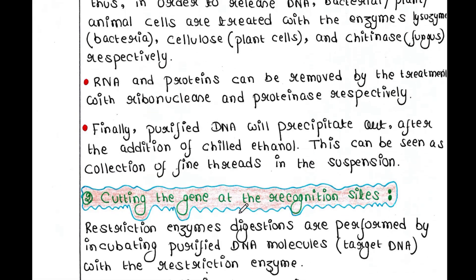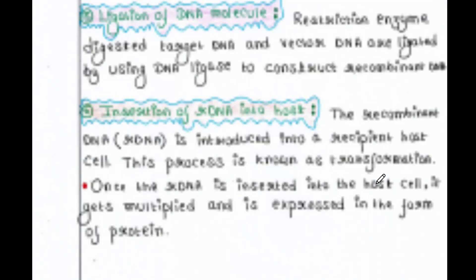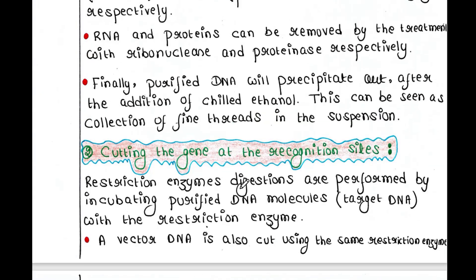The next step is cutting the gene at the recognition sites. Now you have the whole DNA, but you need the gene of interest specifically. You need to add some restriction enzymes to cut this gene of interest. Your restriction enzyme will cut your gene on this side and on this side, and then you will get your gene of interest. You also need to cut the vector DNA with the same restriction enzyme at two sides. Restriction enzyme digestions are performed by incubating purified DNA molecules — your target DNA — with the restriction enzyme, and the vector DNA is also cut using the same restriction enzyme.